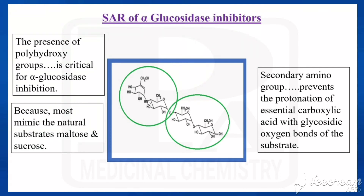They also have a secondary amino group, which prevents the protonation of essential carboxylic acids with the glycosidic oxygen bond of the substrate. So, the two key features for alpha-glucosidase inhibition are: the presence of polyhydroxy groups (mimicking natural substrates) and the secondary amino group (preventing protonation). That is all about alpha-glucosidase inhibitors.